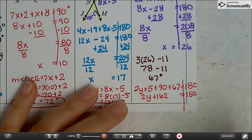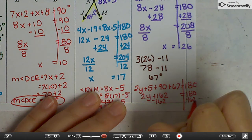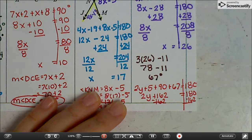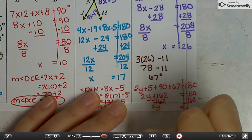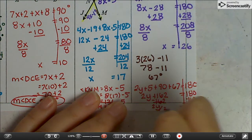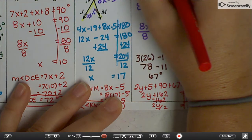Oops, you can't even see what I'm doing. Minus 162. So 2y equals 18, and 18 divided by 2 is 9. So y equals 9.